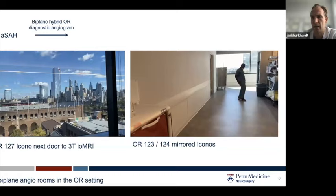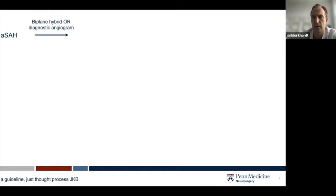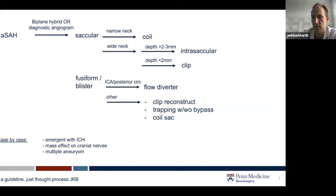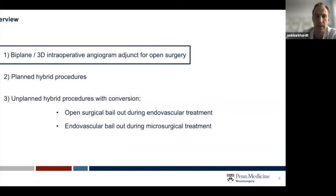In our modern era, when a ruptured aneurysm arrives, these patients go directly into one of these rooms for a diagnostic angiogram. Based on that, we decide whether to treat endovascular, try endovascular and switch to open, or vice versa. A saccular aneurysm with a narrow neck usually gets coiled when ruptured; wide-necked ones may still be coiled, treated with intrasaccular devices, or clipped depending on morphology. For more challenging aneurysms—fusiform or others—more complex treatment options are chosen, and ICH, mass effect, or multiple aneurysms also change the strategy. Whatever you decide, you can perform intraoperative 3D and biplane angiography to confirm treatment before the patient leaves the OR—a true one-stop shop.